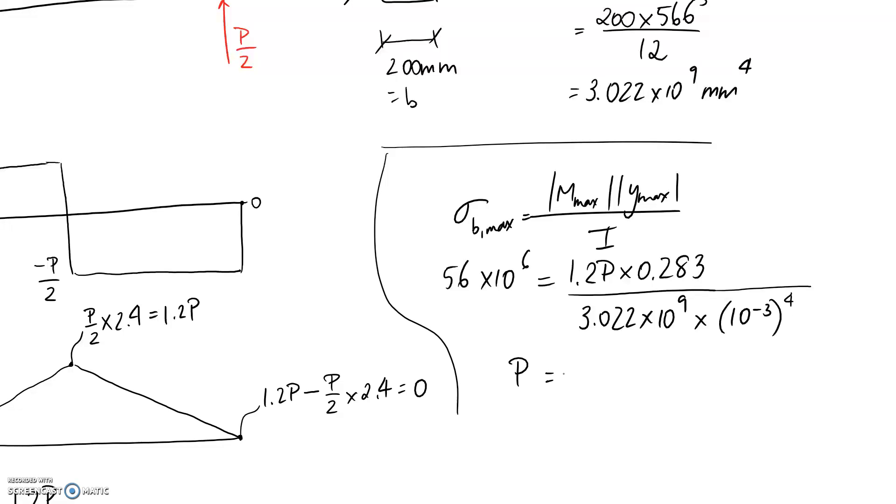So we're left with this equation where the only unknown is P inside it. So you can rearrange for P, and it comes out to be about 798,332. It's going to come out in the base units, so if you want to then convert it because it's quite a large number, you can convert it, say, to kilonewtons, and it's going to be divided by a thousand, so 798 would be the answer.